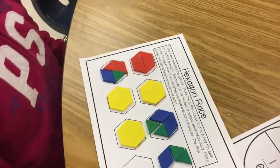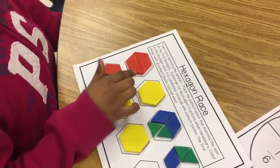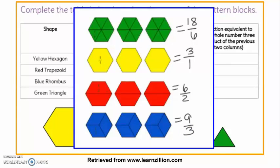Do you see any fractions that are equivalent on yours? Two halves is equivalent to one whole. An extension to the hexagon game can be found at LearnZillion. In this task, students will explore the number of pattern blocks required to make three whole hexagons. As they build the hexagons, they discover that 18 sixths, 6 halves, and 9 thirds all equal three.